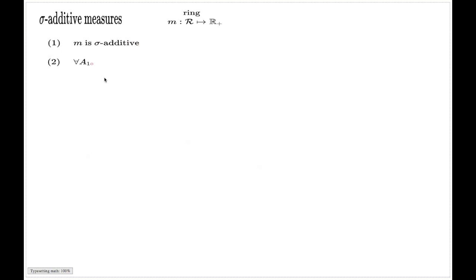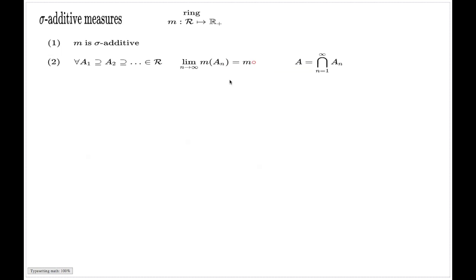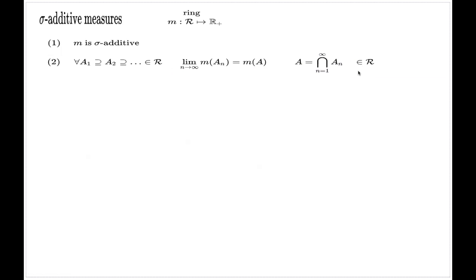Property two: you have a sequence of decreasing subsets of your ring, and if you set A to be the intersection of this sequence, then the limit of individual measures of A_n actually exists. This identity says that the limit exists and equals the measure of A, subject to the condition that this intersection belongs to the ring. This property is sometimes referred to as upper semi-continuity.